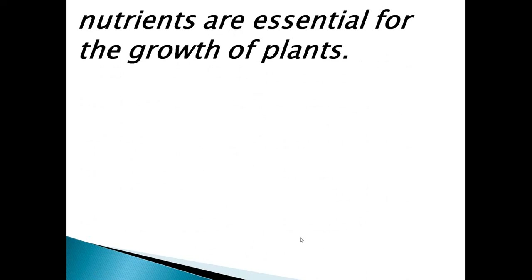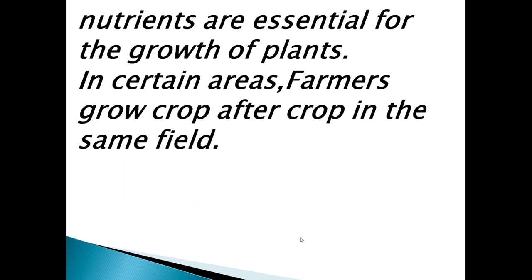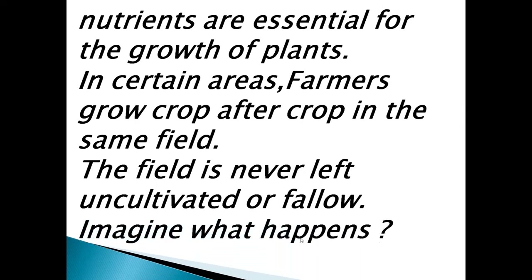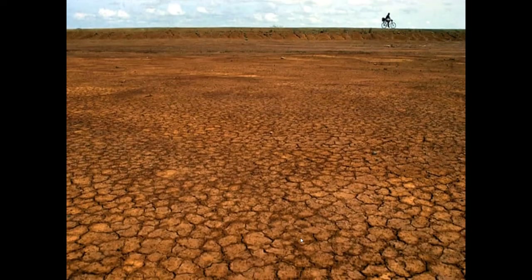Nutrients are essential for the growth of plants, but in certain areas farmers grow crop after crop in the same field. The field is never left uncultivated or fallow. If the farmer is continuously growing crops in the field, then the soil becomes infertile and it will lose all the nutrients.